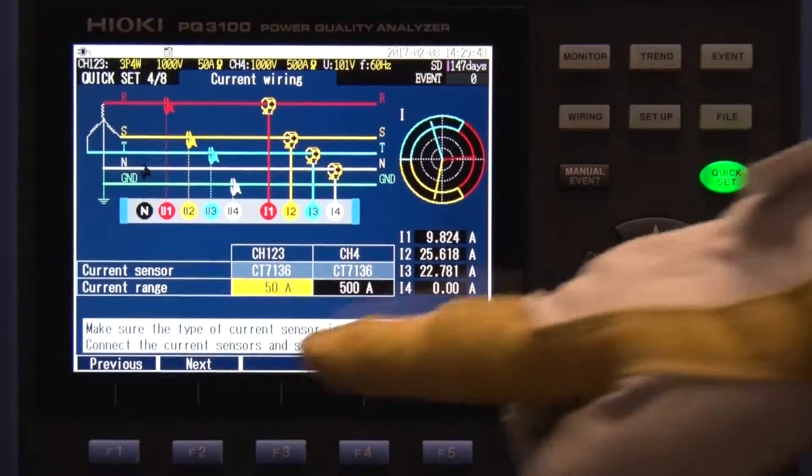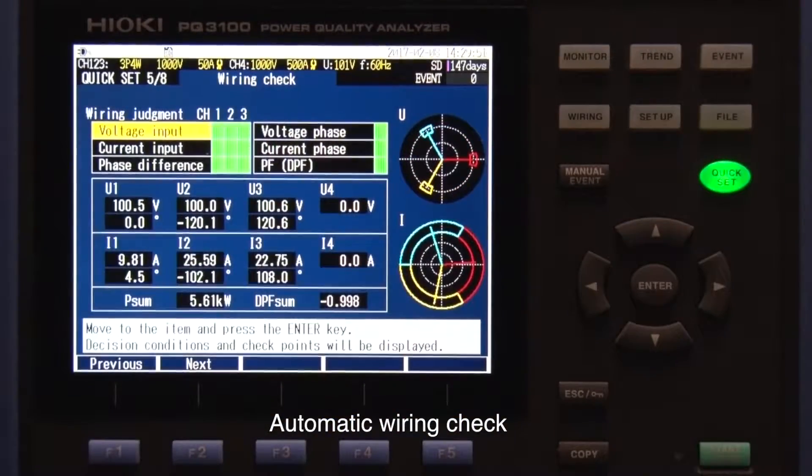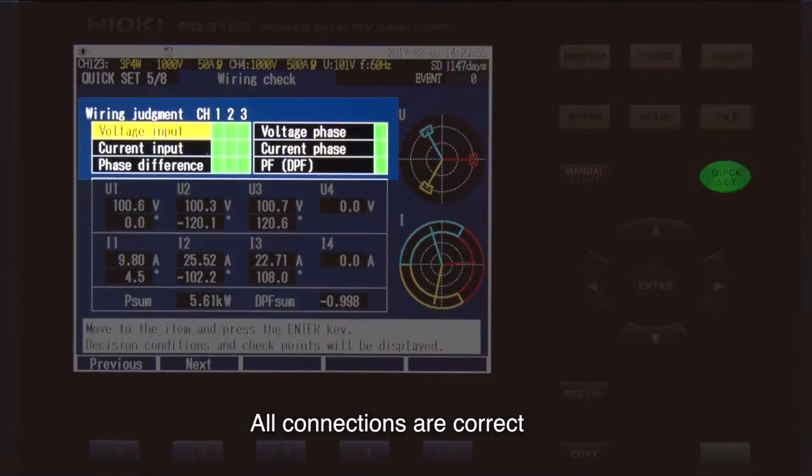The PQ3100 automatically checks for correct wiring and warns you if there is an error. This shows that all connections are correct.